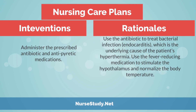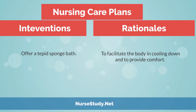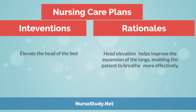Intervention: administer the prescribed antibiotic and antipyretic medications. Rationale: use the antibiotic to treat the bacterial infection (endocarditis), which is the underlying cause of the patient's hyperthermia; use the fever-reducing medication to stimulate the hypothalamus and normalize body temperature. Intervention: offer a tepid sponge bath. Rationale: to facilitate the body in cooling down and to provide comfort. Intervention: elevate the head of the bed. Rationale: head elevation helps improve expansion of the lungs, enabling the patient to breathe more effectively.